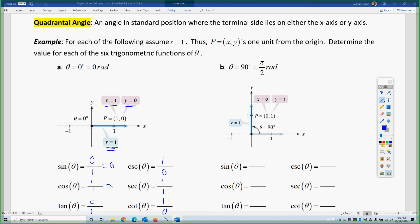This is 0, this is 1, this is 0. This is undefined, because you cannot divide by 0. This is 1, and that is undefined.